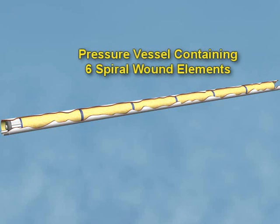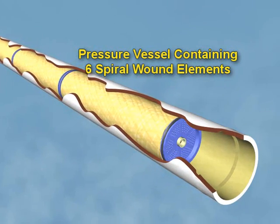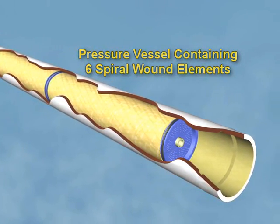A common pressure vessel, as shown here, has a fiberglass shell and contains six spiral-wound RO elements.